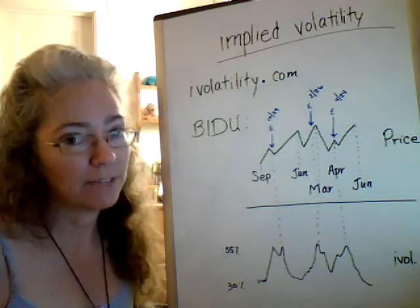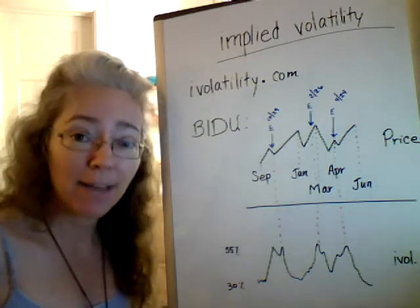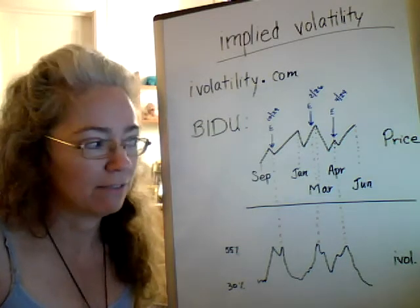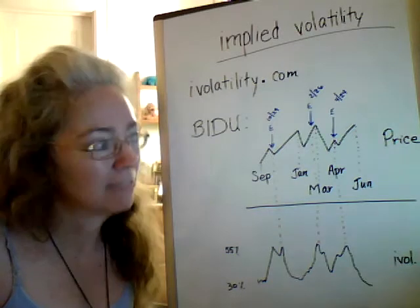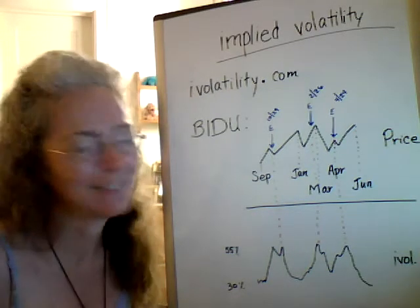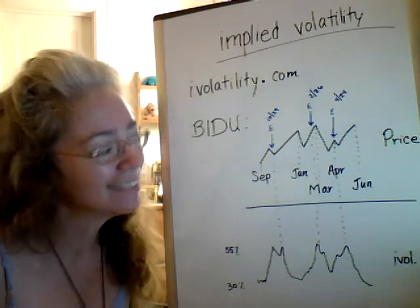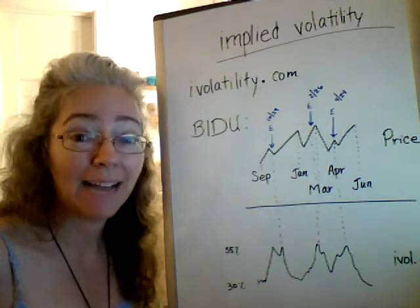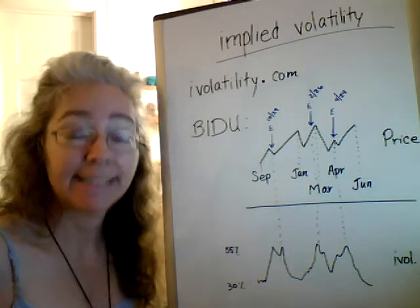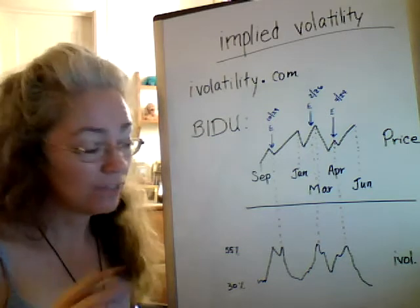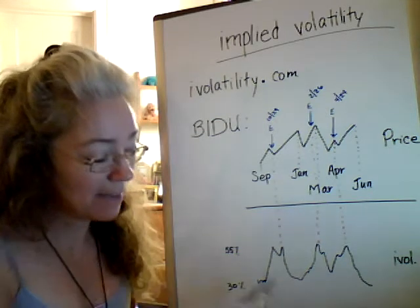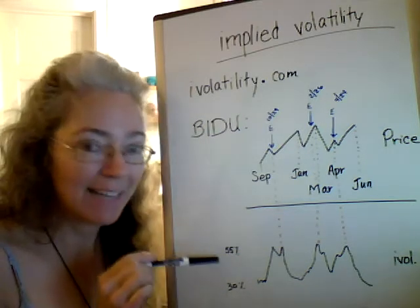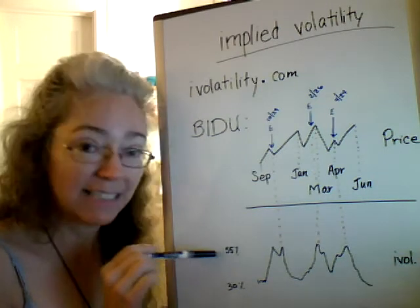So what's the point of all this? If you're going to buy a call option — which I don't recommend, even though I do it myself — you want to buy when the price is low and sell when the price is high. So you want to buy when the implied volatility is down near the 30% range. You don't want to be buying a call option right before earnings when the volatility is way up at 55%.